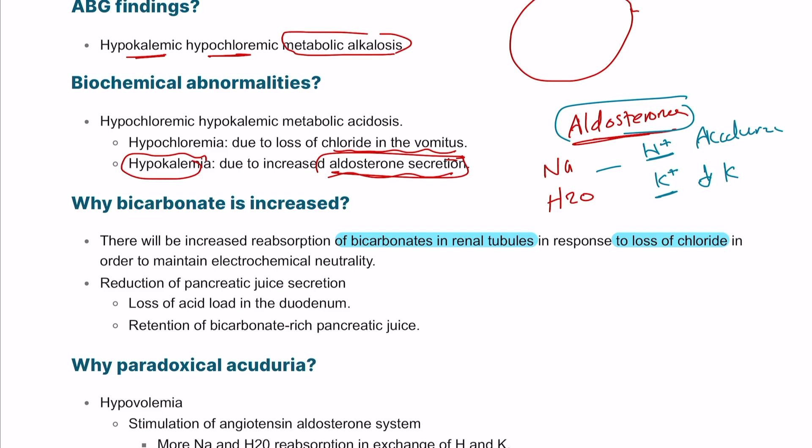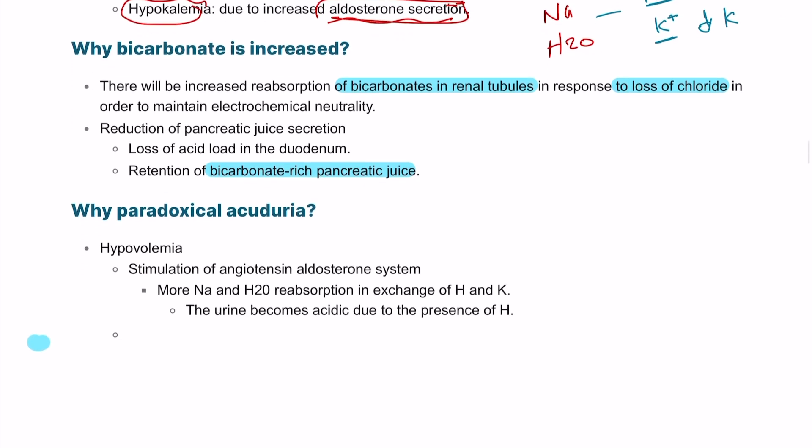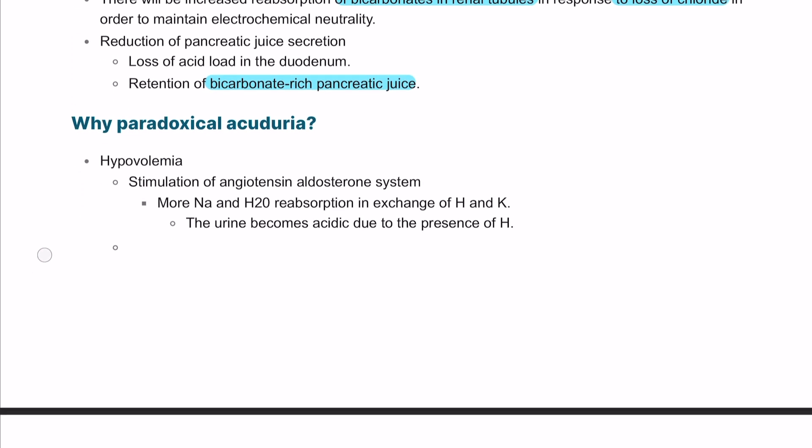Another cause is reduced pancreatic juice secretion. The pancreatic juice is usually bicarbonate-rich, and this will lead to increase of bicarbonate. Regarding paradoxical aciduria, hypovolemia will lead to stimulation of the renin-angiotensin-aldosterone system, leading to salt and water retention in exchange between hydrogen and potassium from the distal convoluted tubule and collecting duct.